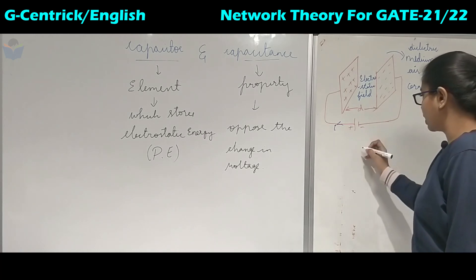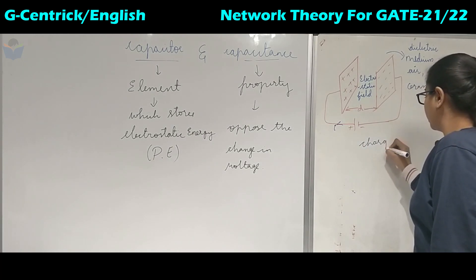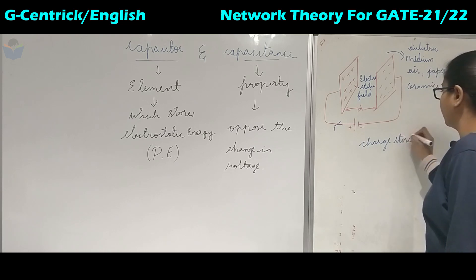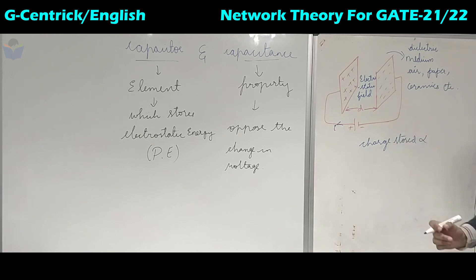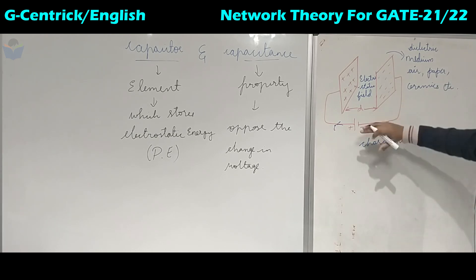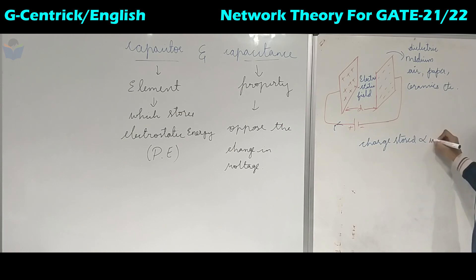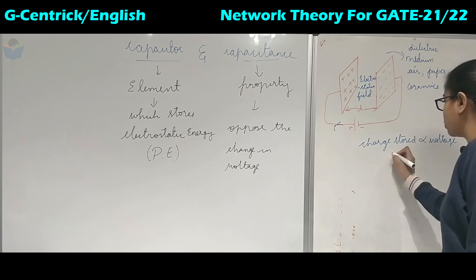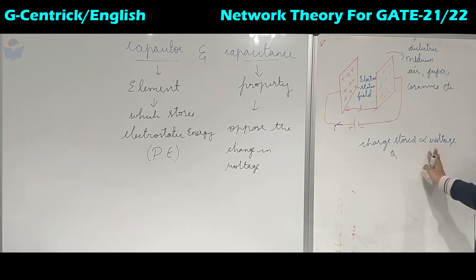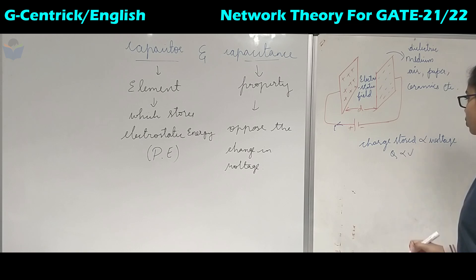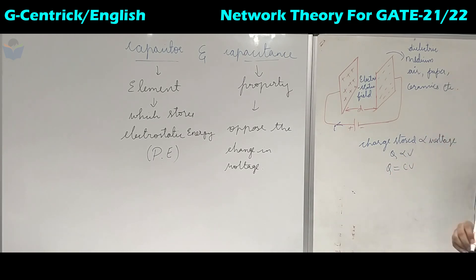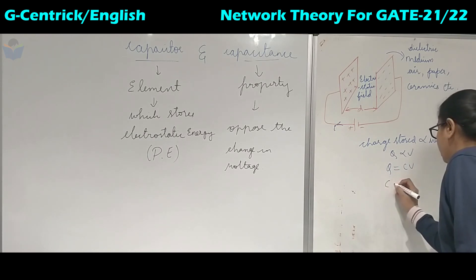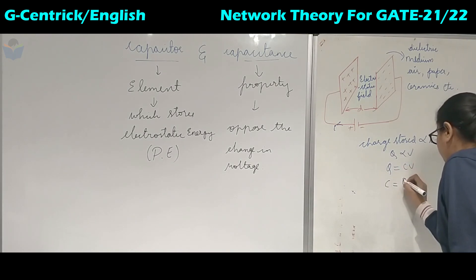According to this, we conclude that charge stored in the capacitor plates is directly proportional to the voltage across the plates. So charge Q is directly proportional to voltage V. When we remove the proportionality sign, Q is equal to C into V, and rearranging, C is equal to Q upon V.